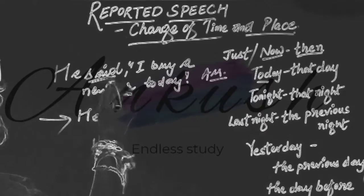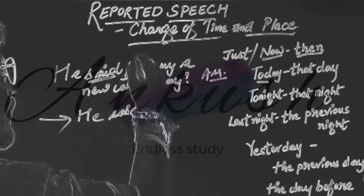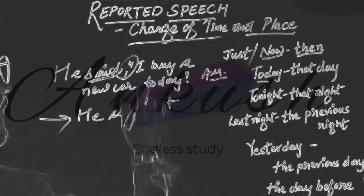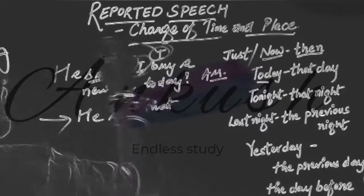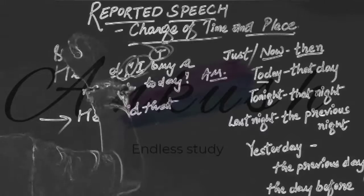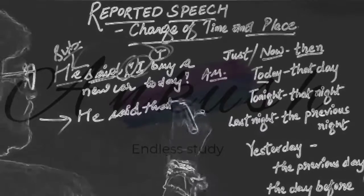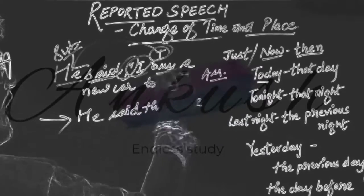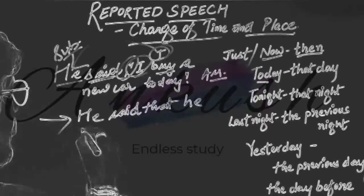We know that if 'said to' is coming we use 'told', but if simply 'said' is coming we can write it as it is. On removing the comma and inverted commas, we use 'that': he said that. 'I' is first person so it changes according to the subject, which is 'he'. 'Buy' is the first form of the verb — present indefinite — so it will get changed into past.